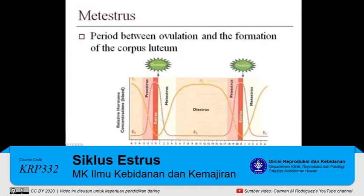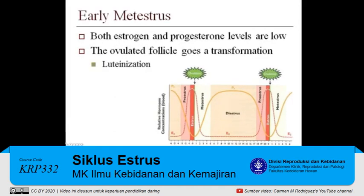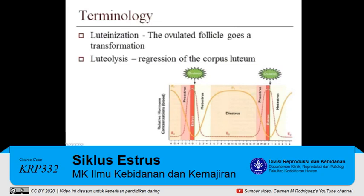Metestrus is the period between ovulation and the formation of the corpus luteum. During early metestrus, the levels of both estrogen and progesterone are low. During this time, the ovulated follicle is undergoing the transformation to become the corpus luteum — the process of luteinization is occurring. It is important to keep your terminology straight: luteinization is when the ovulated follicle becomes the corpus luteum, while luteolysis is the regression of the corpus luteum.